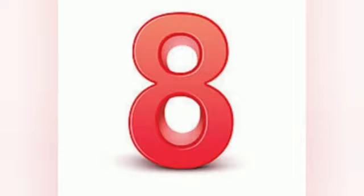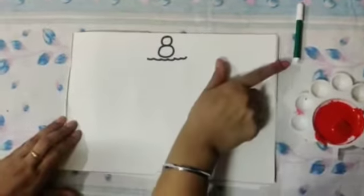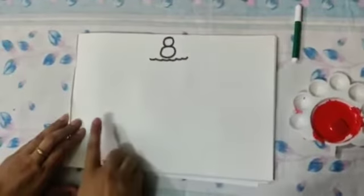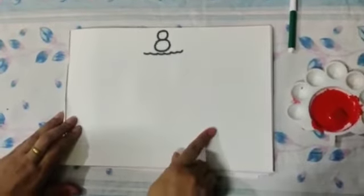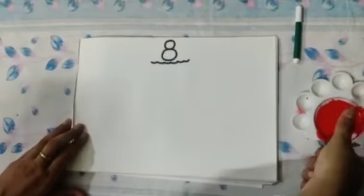Let's do the activity of number 8. For this activity we need file, red watercolor and green sketch pen. Today we will make 8 apples with thumb impression. So let's begin.